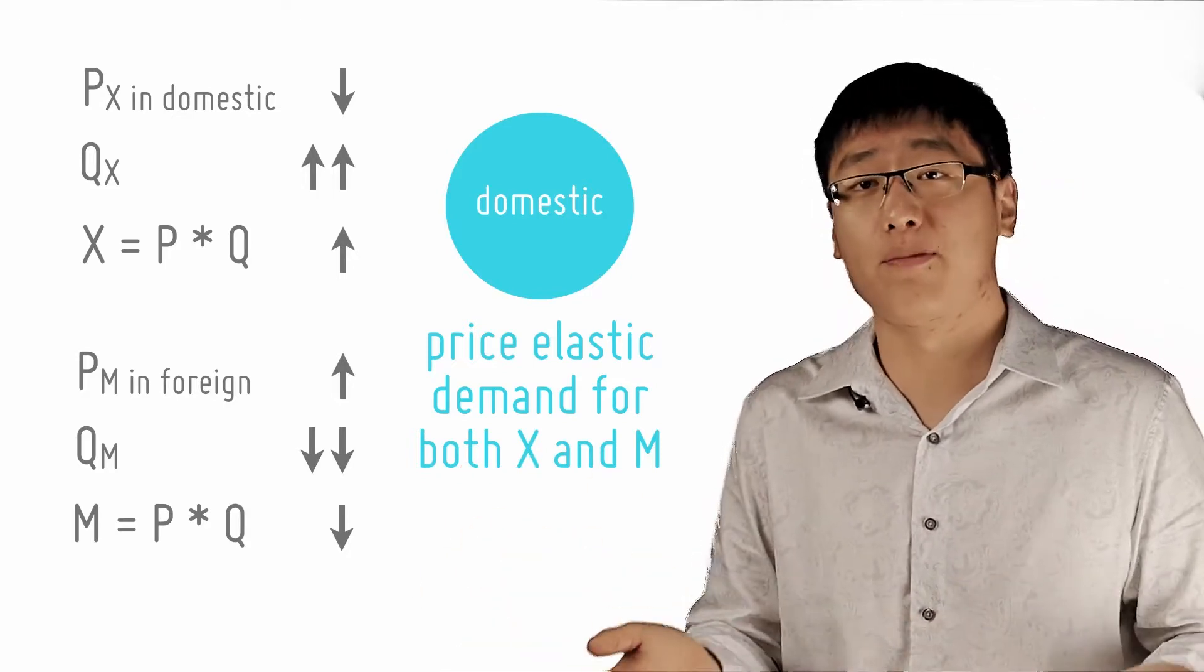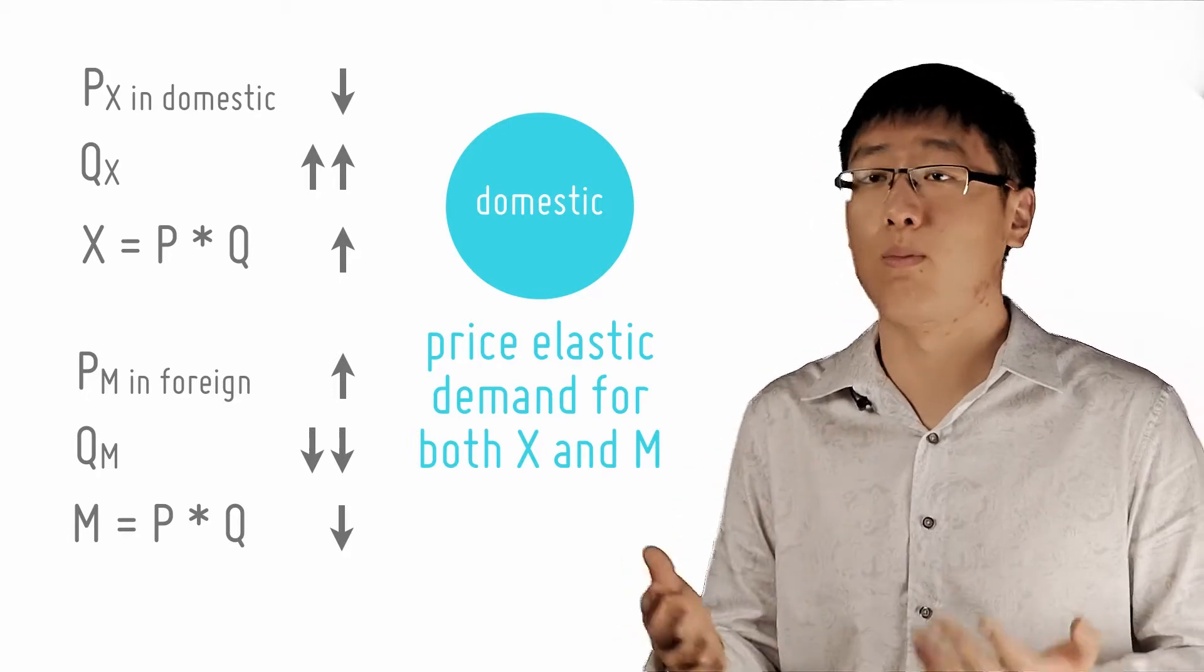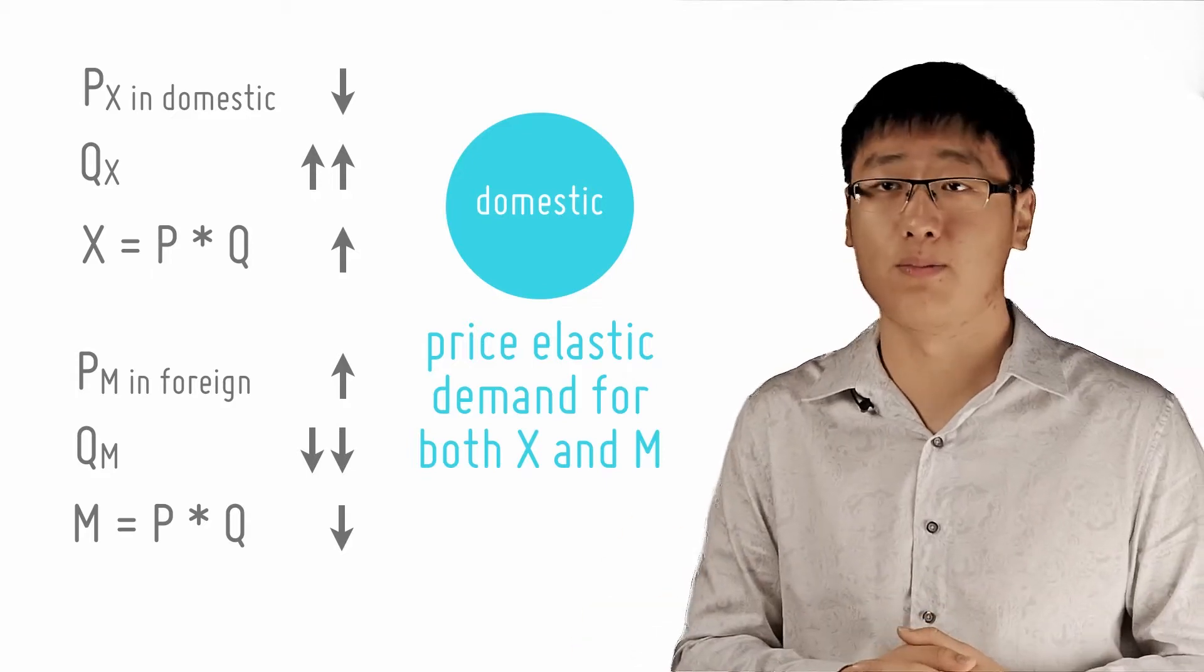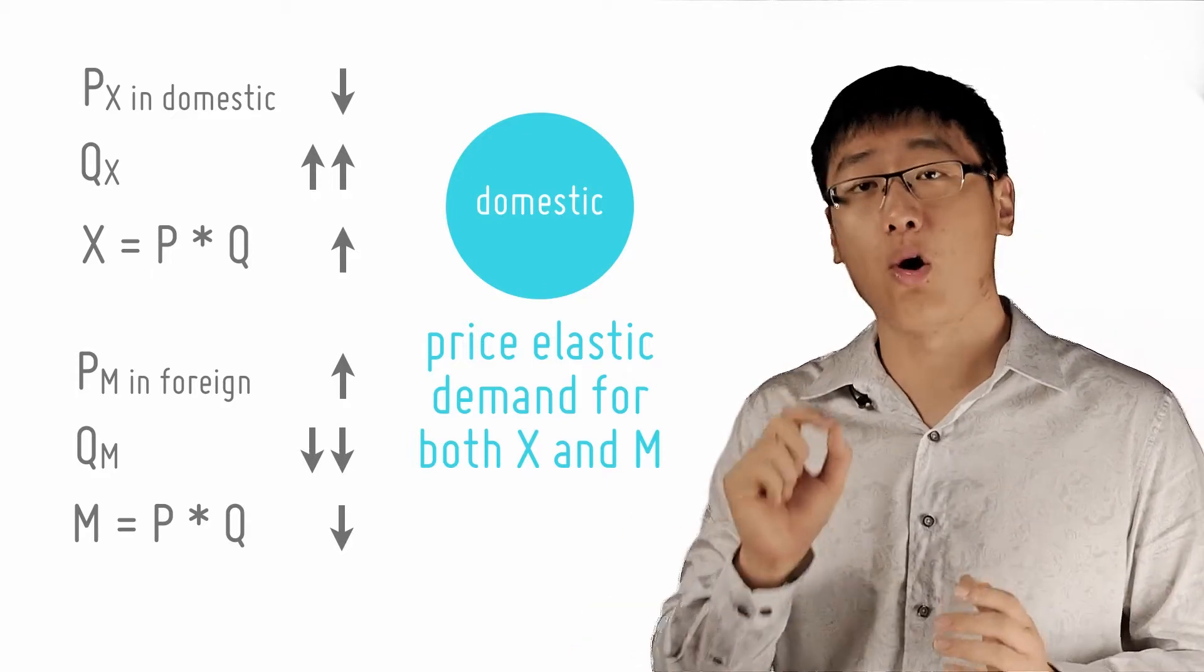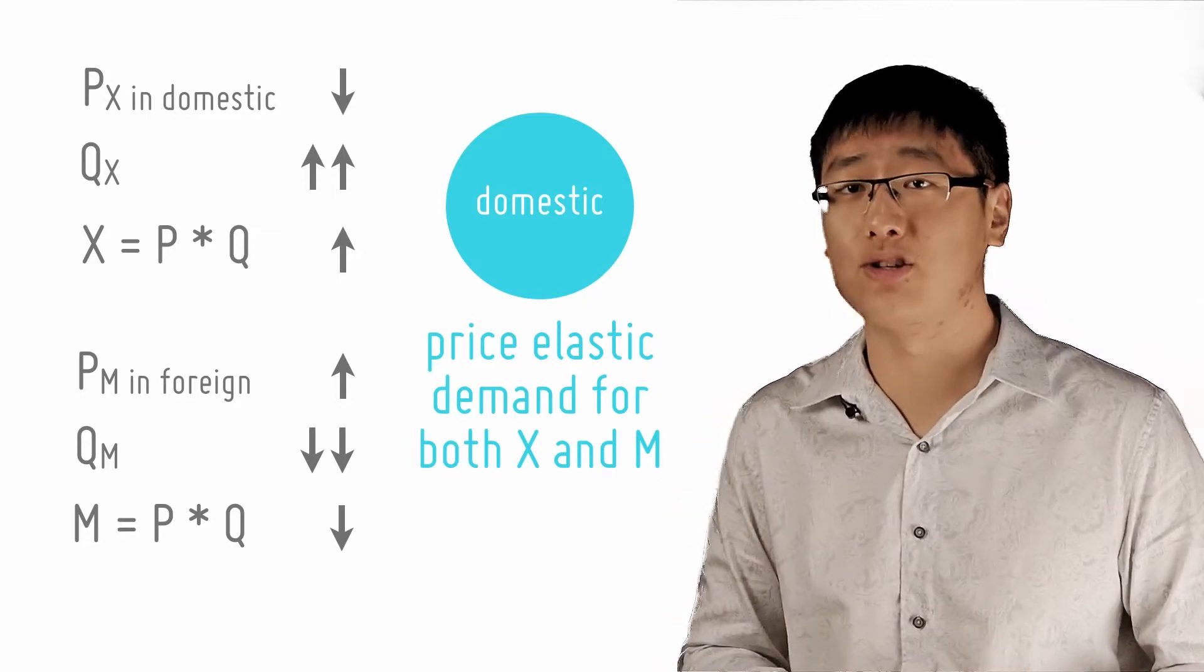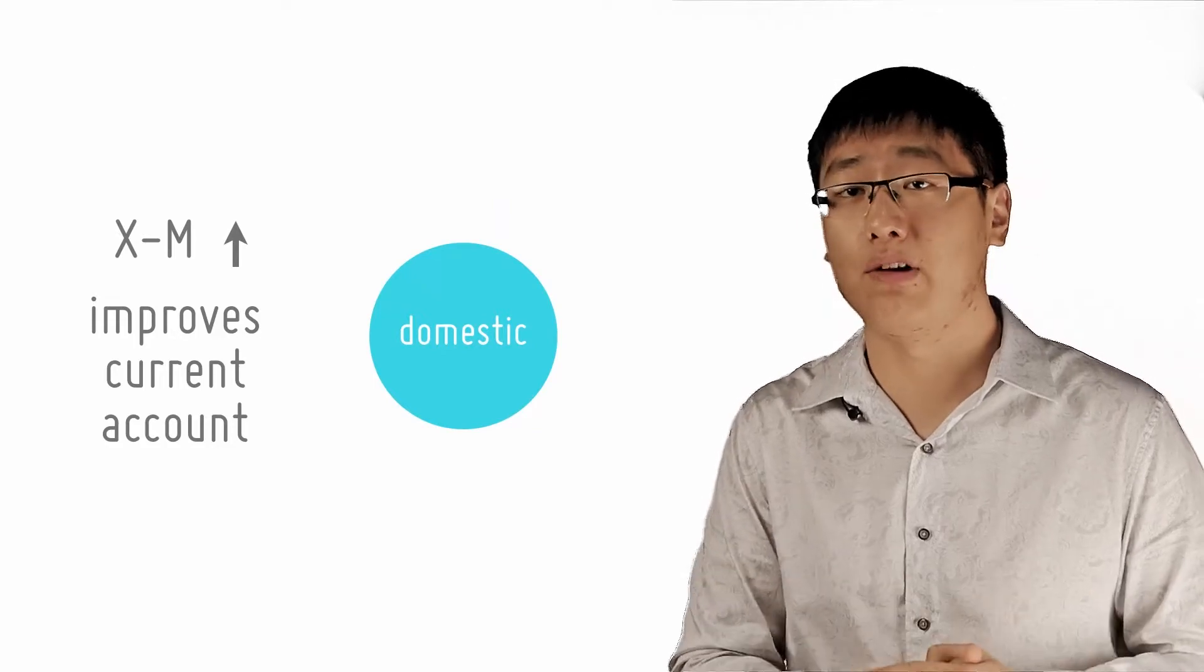If both have a price-elastic demand, then the quantity of exports increase more than proportionately, and the quantity of imports decrease more than proportionately. This causes the value of exports to increase and the value of imports to decrease, and eventually causing your net exports to increase. This improves your current account.